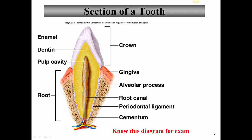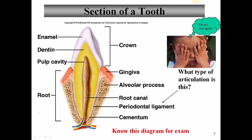The gingiva, or gums, come up and have a small groove at the neck of the tooth. At the bottom of the tooth there's a layer called cement or cementum — a calcified connective tissue that covers the outer surface of the root and attaches the tooth to the periodontal ligament. The periodontal ligament consists of strands of connective tissue that anchor the tooth into the bone of the jaw. This joint is called a gomphosis — the only example of this type of joint in the body.